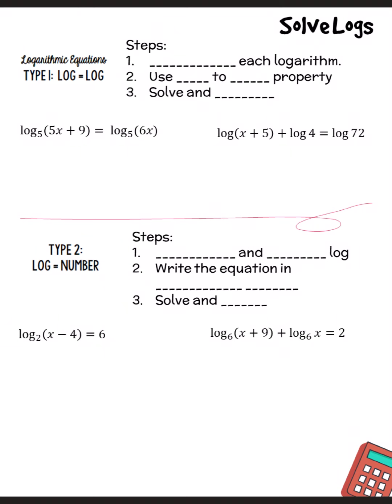So our steps for if we've got a log equaling a log is we are going to condense each log if we have to. So that means that if on one side of the equal sign we've got two logs, then we're going to condense it into one. In this example, we do not, so no condensing needed. But on this second example, you see how we have log plus a log equals a log. We need to condense that side first.